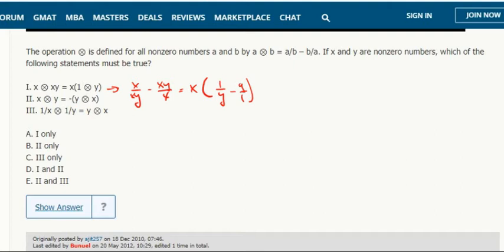So that's going to distribute the x through that. x over y minus xy over 1. Interesting. This cancels here. No, those aren't equal, right?